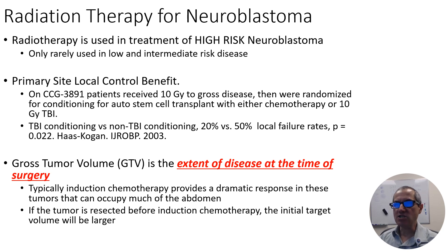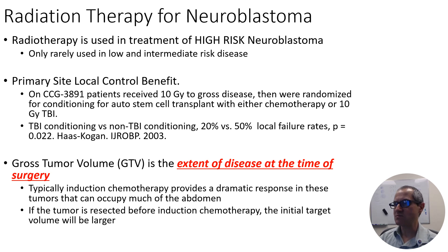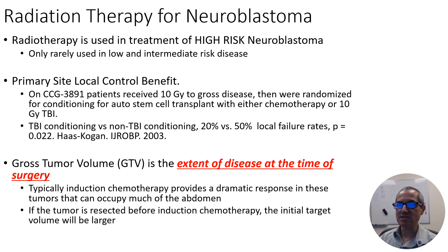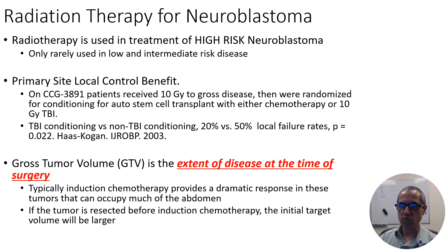The benefit for radiation therapy in terms of local control comes from a study conducted in the 1990s and reported in 2003 by Dr. Daphne Haas-Kogan, then at University of California San Francisco. She looked at patients conditioned for stem cell transplant with either 10 Gy of total body radiation or those who also received a total of 20 Gy to the primary site of disease. Patients who received 20 Gy to the initial site had improved local control — and that's where the 20 Gy comes from.